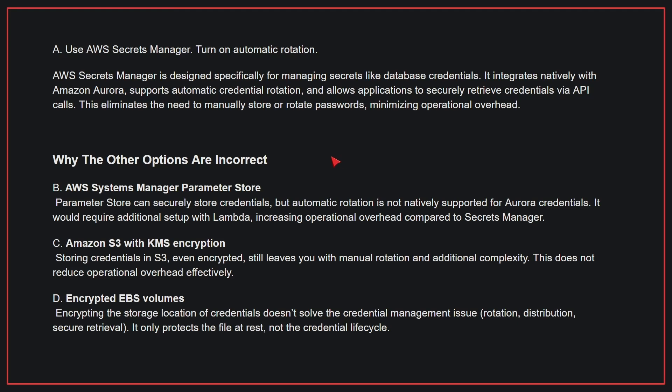Why the other options are incorrect: B — AWS Systems Manager Parameter Store can securely store credentials, but automatic rotation is not natively supported for Aurora credentials; it would require additional setup with Lambda, increasing operational overhead compared to Secrets Manager. C — Storing credentials in Amazon S3 with KMS encryption still leaves you with manual rotation and additional complexity, and does not reduce operational overhead effectively. D — Encrypting EBS volumes only protects the file at rest, not the credential lifecycle, and doesn't solve the credential management issue. Therefore, the correct answer is A.